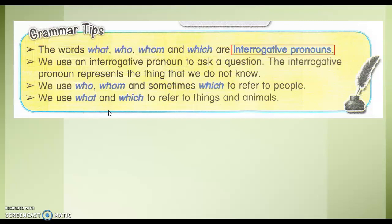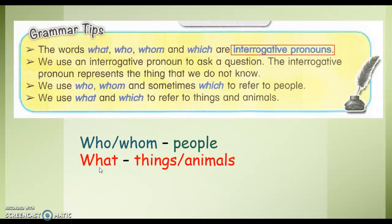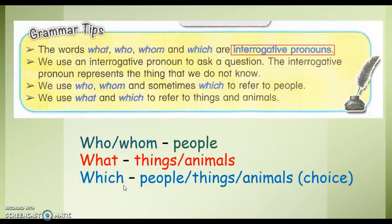You might find this a bit confusing, so I have given you a summary. 那同学们，你们可能觉得有一些混淆，那老师呢，也把你们简单地列了出来。 Who or whom is for people. What is for things or animals. And which — you can use which to refer to people, things, and animals.